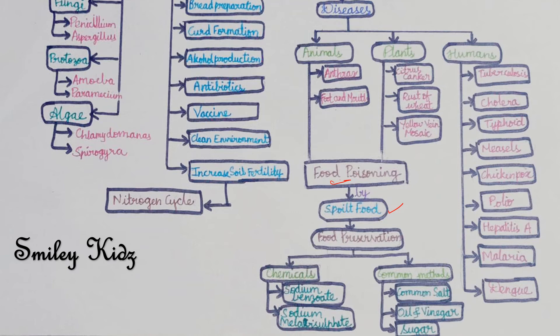Food preservation can be done using chemicals or some common methods. Preservatives prevent the attack of microbes. Sodium benzoate and sodium metabisulfite are some common preservatives.